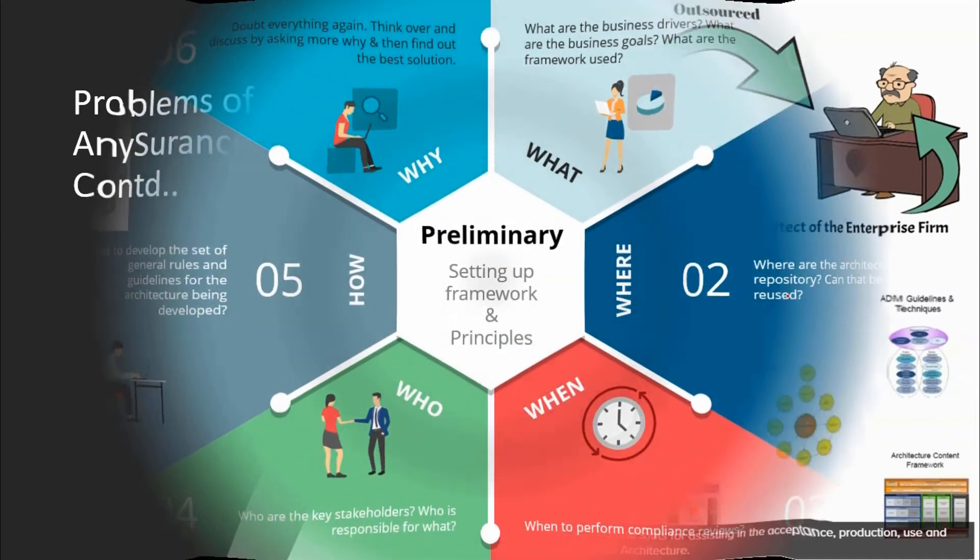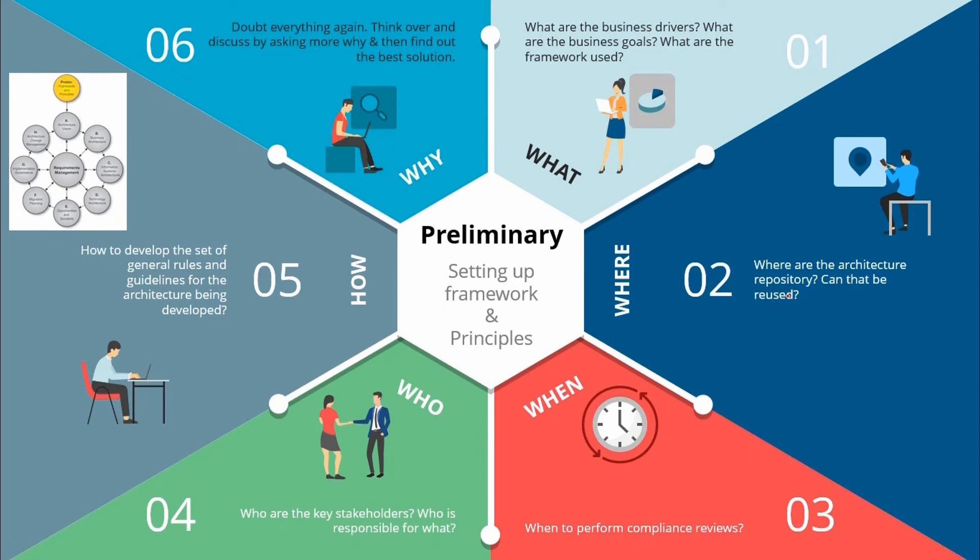Let's have a deep dive into the design phase of preliminary. This preliminary phase is about defining where, what, why, who, and how we do architecture in the enterprise concerned. In this case, it is Any Insurance company. The main aspects to think are: What are the business drivers? What are the business goals? What are the frameworks used? Where are the architecture repositories? Can they be reused? When to perform compliance reviews? Who are the key stakeholders? Who is responsible for what? How to develop the set of general rules and guidelines for the architecture being developed? Doubt everything again, think over and discuss by asking more why, and then find out the best solution.